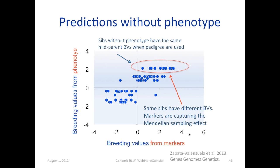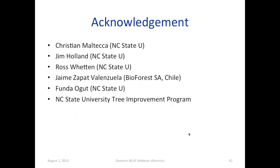Other advantages of genomic BLUP, especially for plant breeders: you can include experimental design factors in your mixed model, like environment and replication effects. And it's very easy to run with various software. Acknowledgments: the slides and material I've used are taken from a textbook being developed by Chris Malteca, Jim Holland, Ross Welton, and myself. We also got a lot of help from our students Jaime Zapata and Kunda Öt, and I have to acknowledge NC State University's tree program.